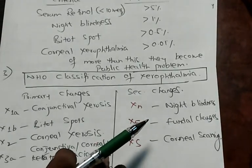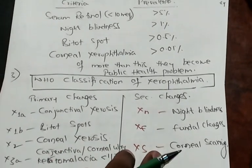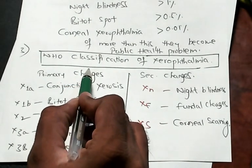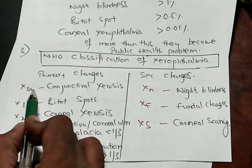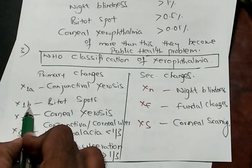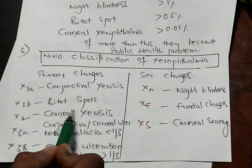What is the WHO classification of xerophthalmia? There are some primary changes and some secondary changes. X1a is conjunctival xerosis, X1b is Bitot spots, X2 is corneal xerosis.